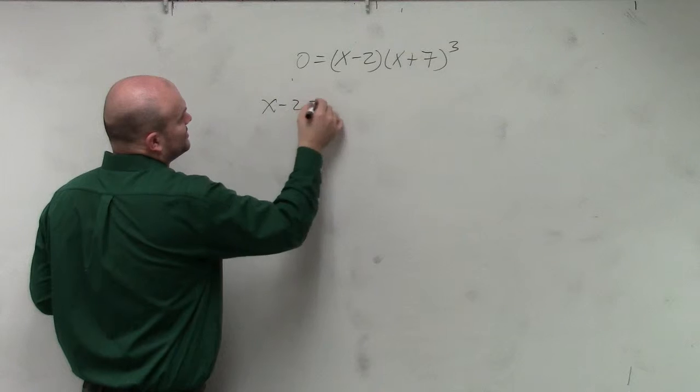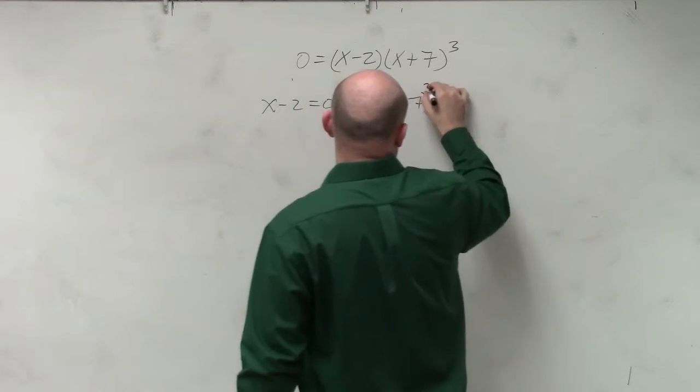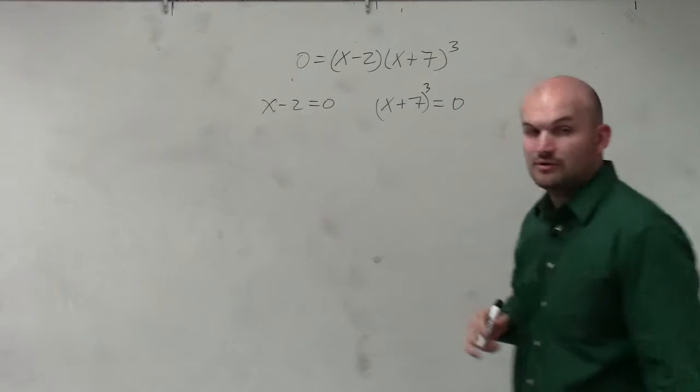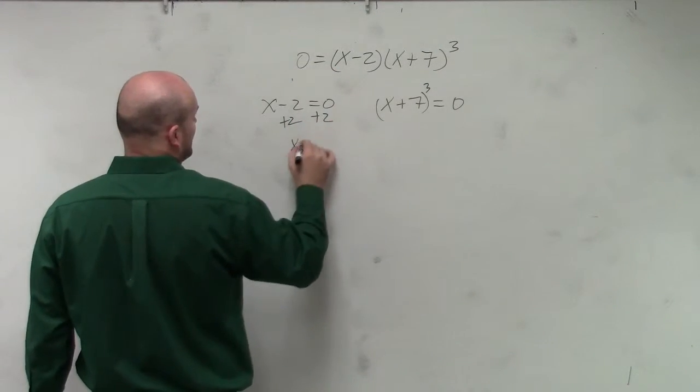So I have x minus 2 equals 0, and x plus 7 cubed equals 0. Now you just go ahead and solve for x. So you add 2 to both sides, x equals 2.